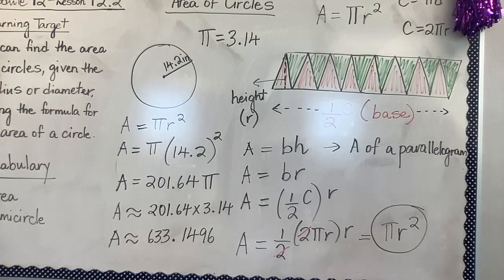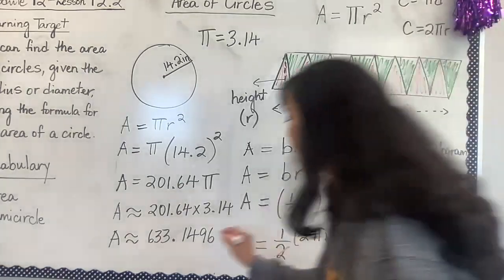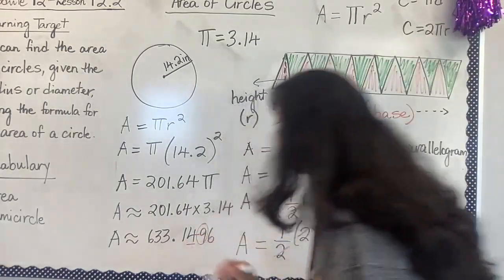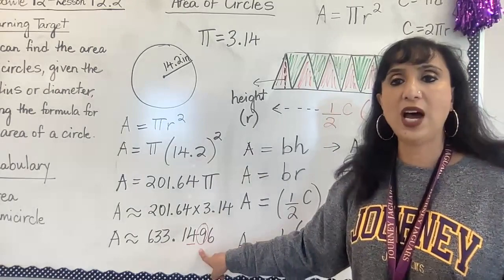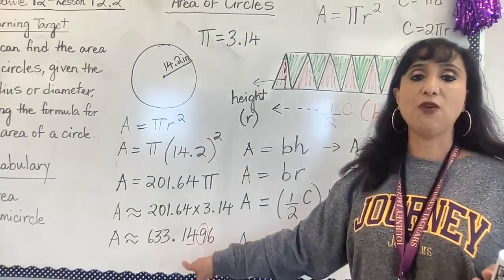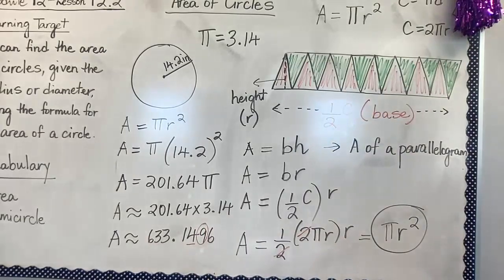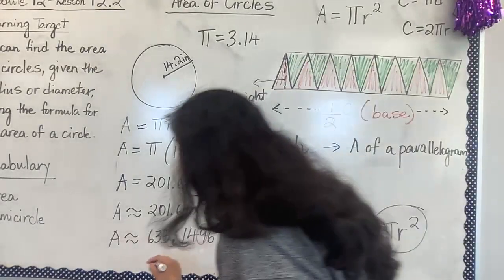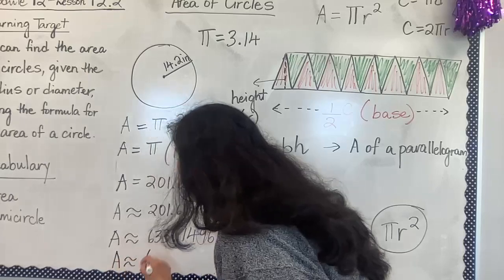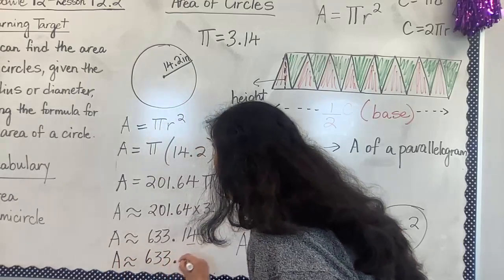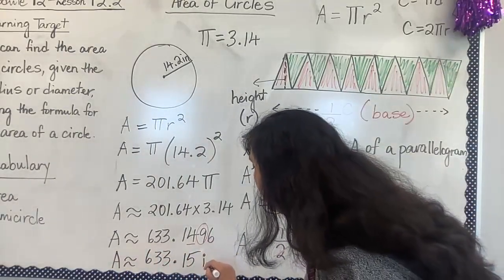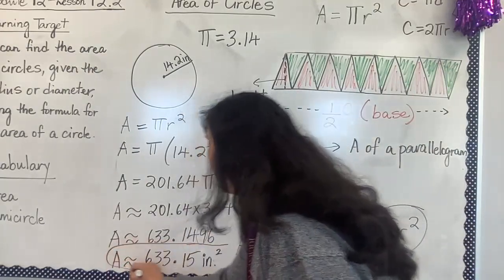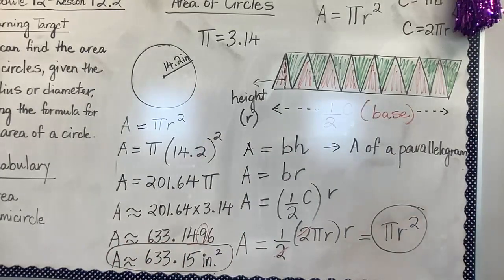It said round to the nearest hundredth if necessary. The hundredth place value is here, so we look at the thousandth place value. Is this number five or higher? It absolutely is, so that four is now going to change to a five. Rounding to the nearest hundredth, my area is approximately 633.15 square inches. This is my area of this shape.